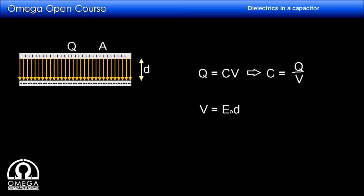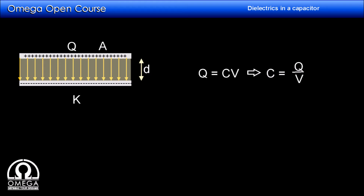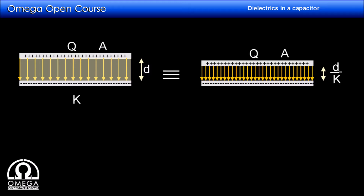Let us insert a dielectric of relative permittivity K in the capacitor. The electric field between the plates will now decrease to E, where E equals E0 divided by K. The potential difference between the plates is now E into D, which equals E0 over K into D. This quantity remains mathematically unchanged if we multiply the original electric field E0 by D divided by K. Physically, this means distance D of electric field inside a dielectric is equivalent to D over K distance of electric field in air or vacuum. In other words, a capacitor with plate area A, separation D, and dielectric K is equivalent to a capacitor of the same plate area, without any dielectric, but with separation D over K.